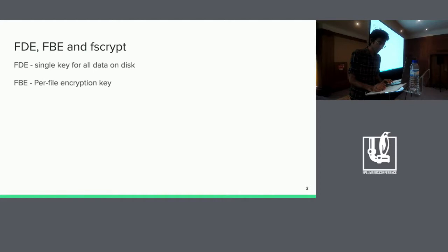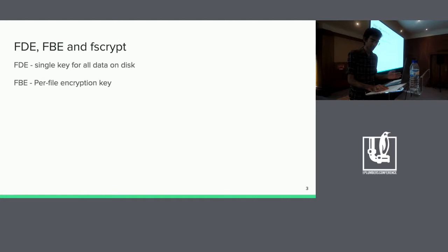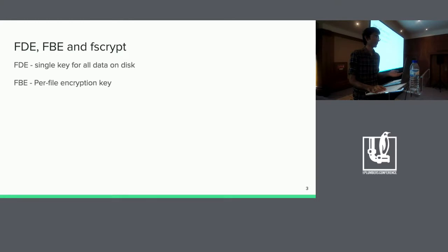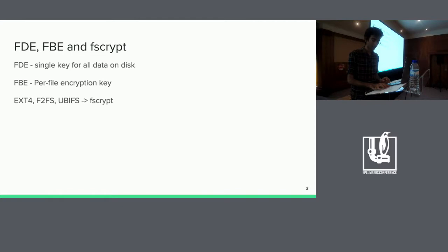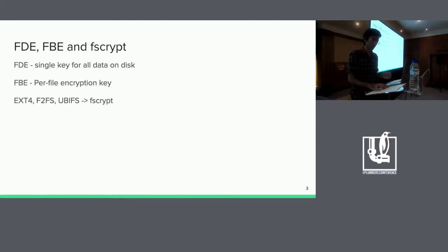So this leads us to the current encryption solution we have on Linux and Android, which is file-based encryption, FBE. The idea of FBE is to have per-file encryption keys — really an encryption context that contains all the information you need to encrypt or decrypt data, like the key, the crypto algorithm, the data unit number, and so on. FBE was built into ext4 about four years ago, and sometime later F2FS began to support it, and the common crypto code between ext4 and F2FS was factored out into FSCrypt. File systems like ext4, F2FS, and UBIFS call into FSCrypt to perform crypto operations whenever they need to, and they maintain information about the encryption context for each file.